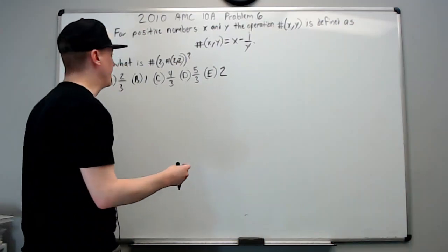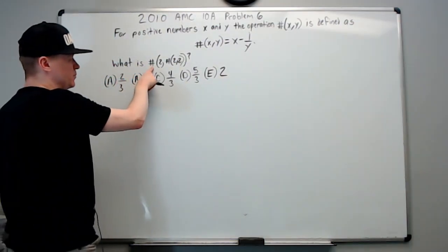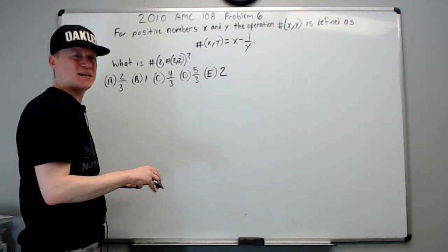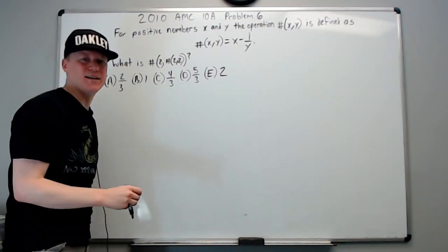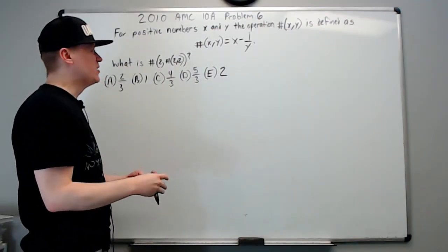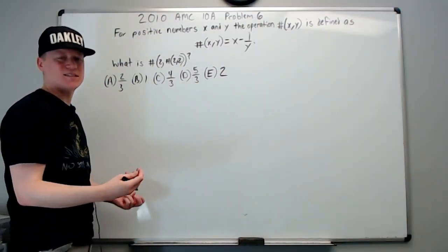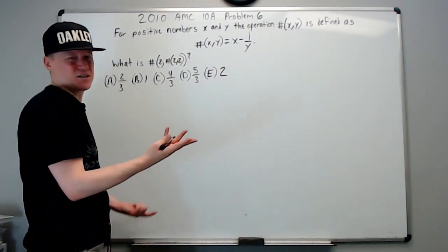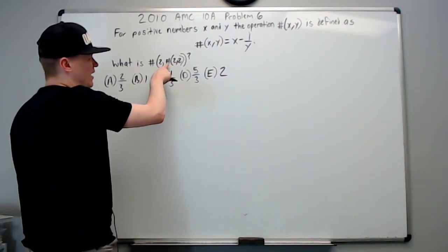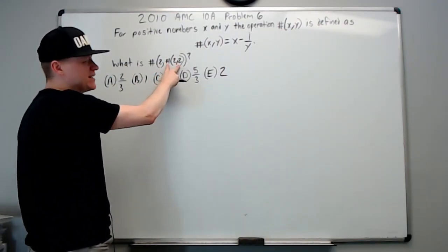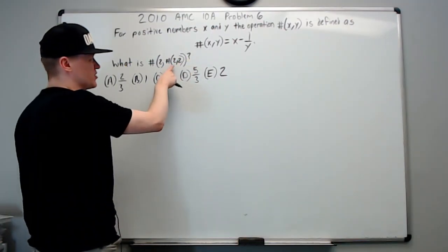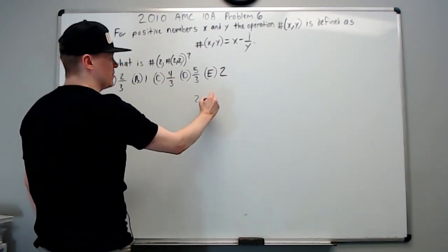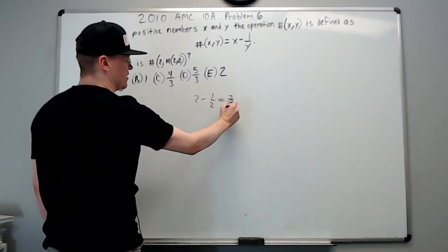This is a very common problem type where you evaluate a custom operation. Start at the innermost part and do that first. The symbol of 2, 2 is 2 minus the reciprocal of 2, so 2 minus one-half is obviously 3 over 2.